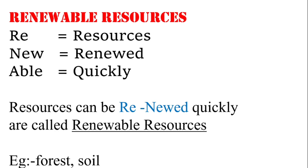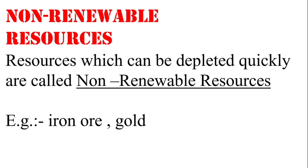The next type is renewable and non-renewable resources. The word renewable can be split into parts: 're' means again, 'new' means renewed, and 'enable' means quickly — so resources that can be renewed quickly are called renewable resources. The best examples are forest and soil. Non-renewable resources are those which can be depleted and not easily replaced, such as iron ore and gold.